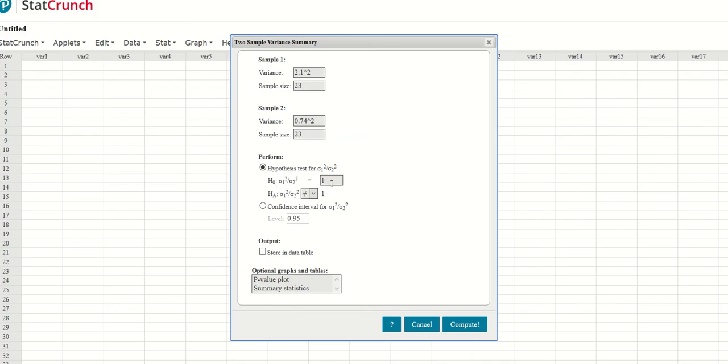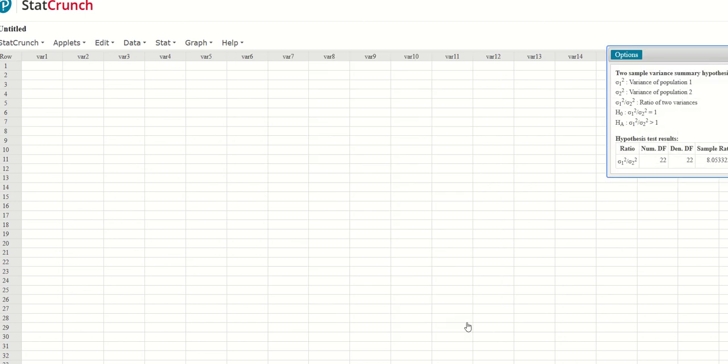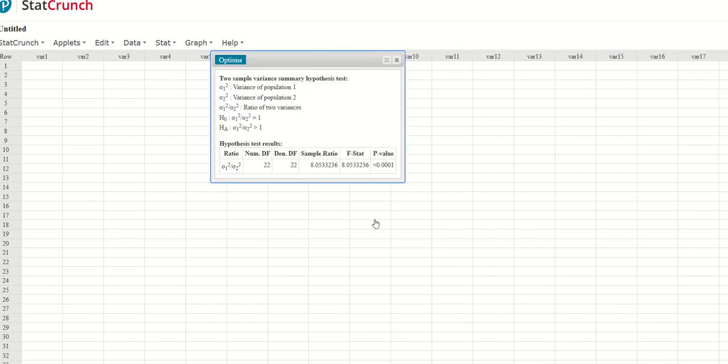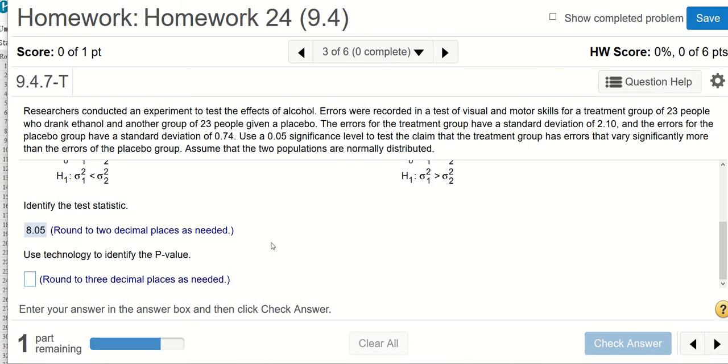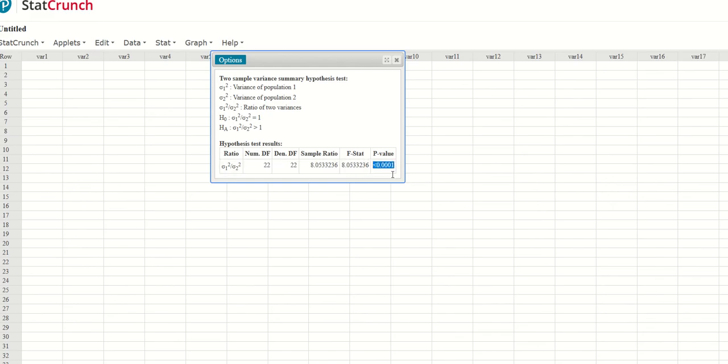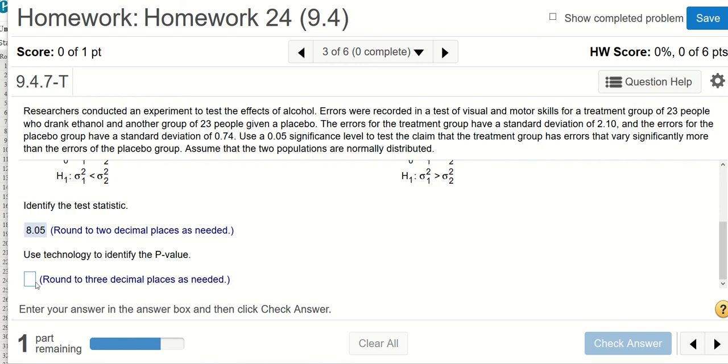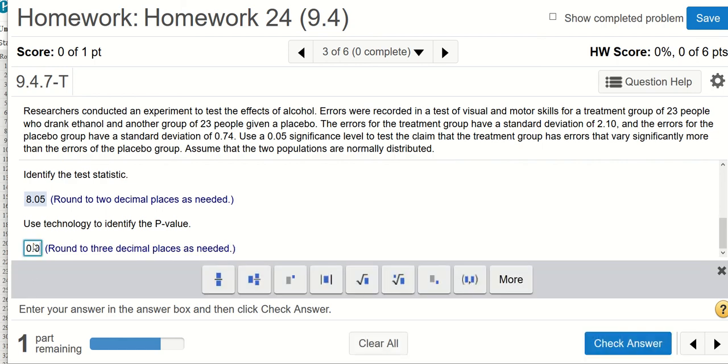Equals 1 and greater than 1. Okay compute. So over here we have our F stat which is 8.053. I'll put 8.05 as your test statistic and your p-value is here, it says less than 0.0001. So if you round it to three decimal places that will be 0.000.